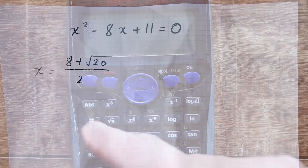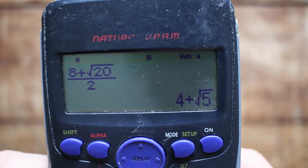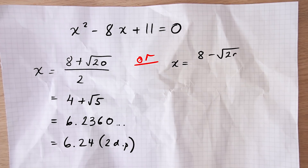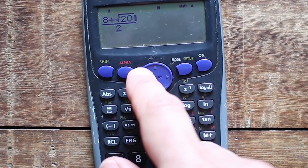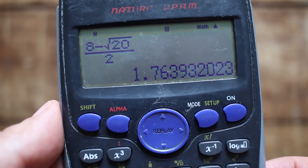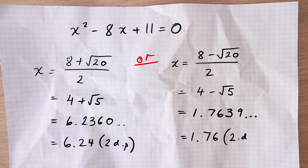Putting it all together: x equals 8 plus or minus the square root of 20, all divided by 2. There's a positive and negative square root of every number. For example, the square root of 9 is 3, but negative 3 is also a square root of 9 because negative 3 times negative 3 gives you 9. So we run through it using the positive square root first, which gives us 4 plus root 5, approximately 6.236 — rounded to two decimal places that's 6.24. Then we redo it using the negative square root, giving us 4 minus root 5, which is approximately 1.763, rounded to 1.76.